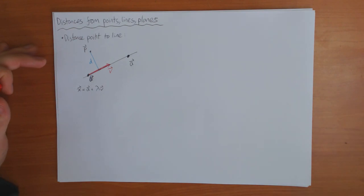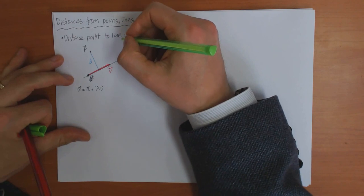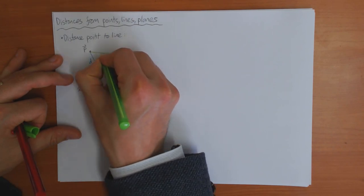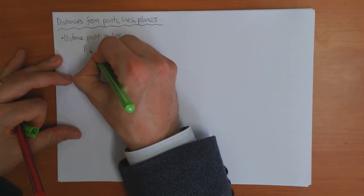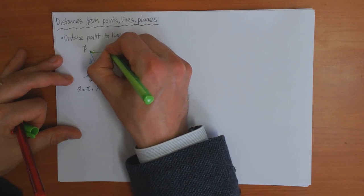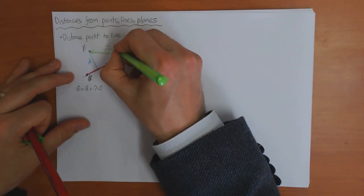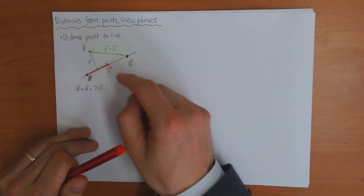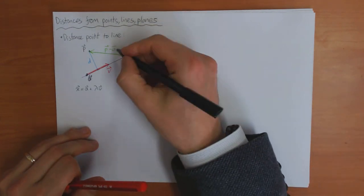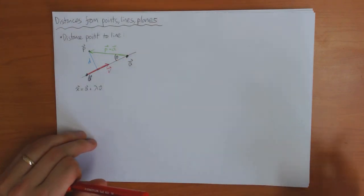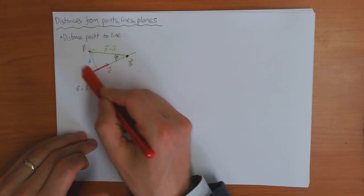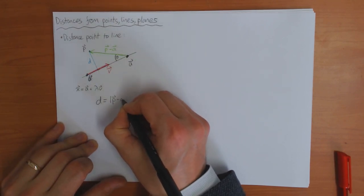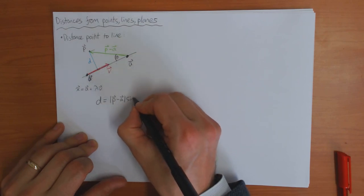The vector P minus A is the vector going from A to P. So this vector from A to P is P − A, and we've made a nice little triangle. If in addition I know this angle theta, then I can write an equation for this triangle: the distance D is equal to the length of the vector P − A times the sine of the angle theta.